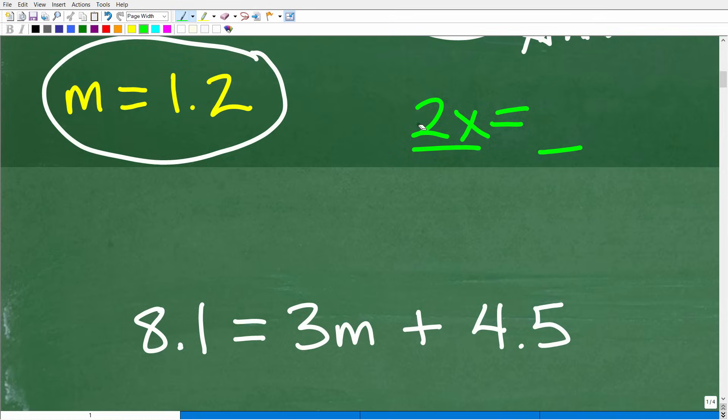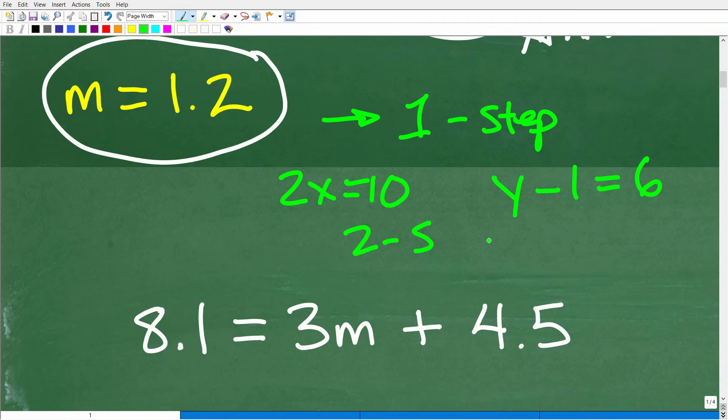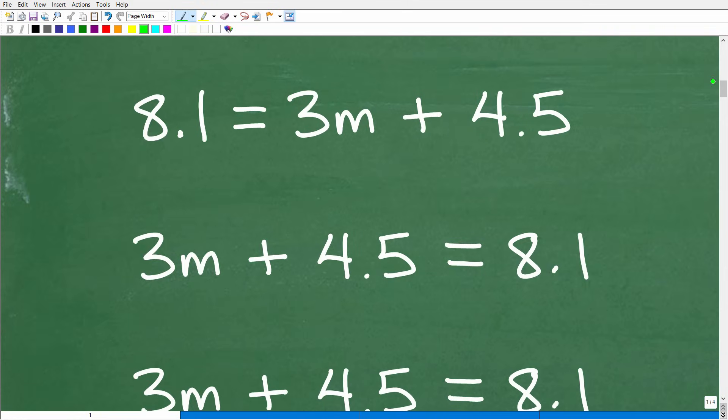So when you build up your algebra skills in terms of solving basic linear equations, you start off with things called one-step equations, things that only require one step to solve, like 2x is equal to 10, or y minus 1 is equal to 6. These equations only require one step. So if you're struggling with equations, first get these one-step equations down, and then you can move on to something called two-step equations, and then get those down, and then you can move on to something called multi-step equations. So if you need help in solving algebraic equations, I'll give you some suggestions here in a second. But anyways, so first things first, let's go ahead and take a look at this problem.